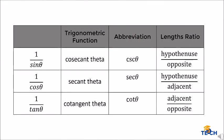1 over sine theta is called cosecant theta, abbreviated as csc theta. Its length ratio is the reciprocal of sine theta — since sine theta is opposite over hypotenuse, cosecant theta is hypotenuse over opposite.